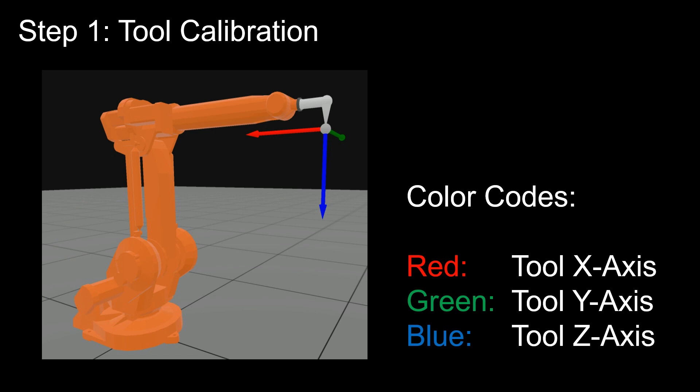So when calibrating the tool, basically we want to find the distance from the mounting flange of the robot to the tip of the tool, and we also want to describe the orientation.